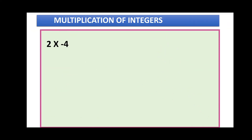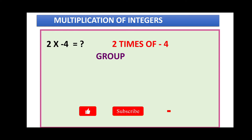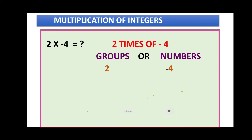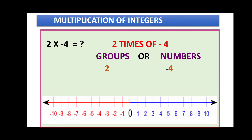Now let us see one more example: two times of minus four, or two into minus four. Groups are two and numbers are minus four. As we have seen, positive into negative always gives minus, so our result is negative.